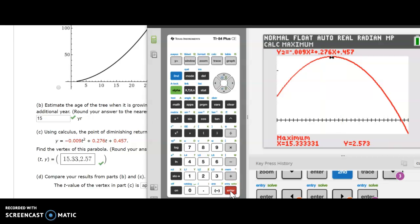So there is my vertex, 15.33, 2.573. And we want to round our answers to two decimal places here. So I typed in 15.33, just the 2.57 at two decimal places.